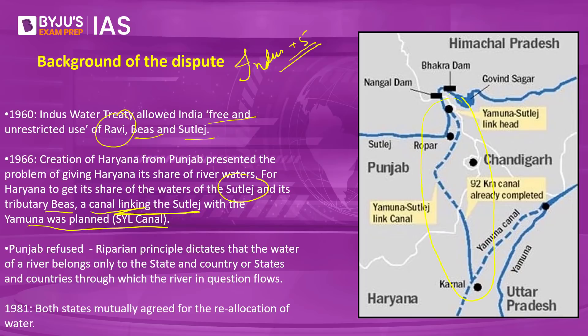On the map, the proposed canal is visible — the dotted portion in Punjab is the section that still has not been built. The 92 km portion in Haryana has already been completed, but the 22 km portion on the Punjab side remains incomplete.